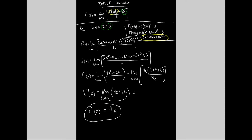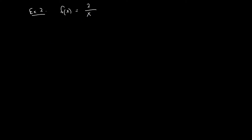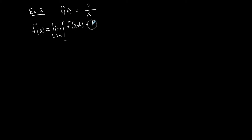So f prime of x, using the definition of the derivative, is equal to 4x. After you learn the definition of a derivative, you'll learn rules to simplify the process and it'll become easier. Now let me do one with a fraction. I want the first derivative, so let me write the definition again: the limit as h approaches 0 of f of x plus h minus f of x, all over h.